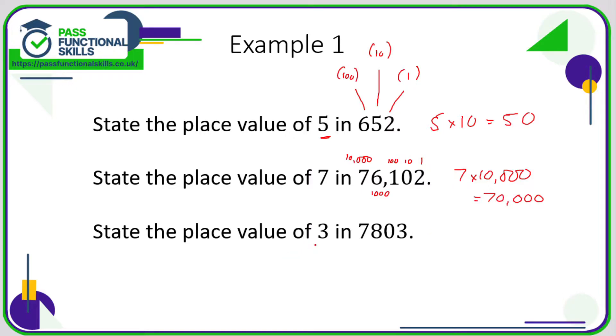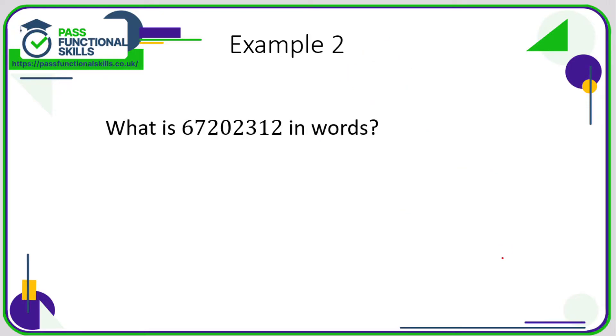The value of the 3 in 7803: the 3 here is in the ones column, or the units column, so that's simply 3 times 1, which is 3. Nice and easy. What is this number here in words? 67,202,312.